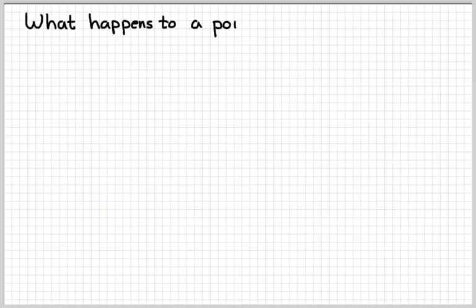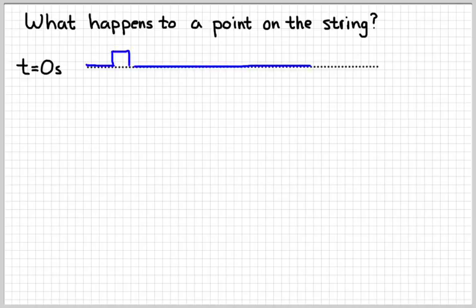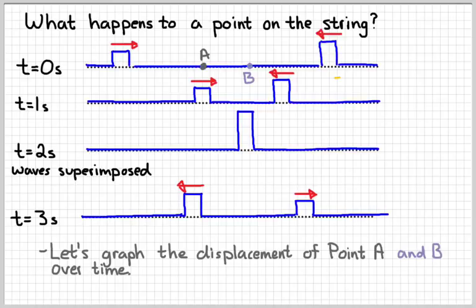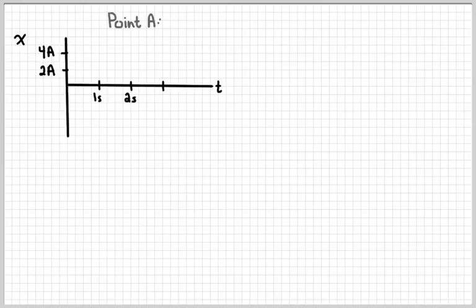The next thing we're interested in is what happens to a point on the string as these two waves go through it. I'm going to bring back the previous example and redraw it. What we want to do is graph the displacement of two points — point A and point B — over time. I put two points on the string: point A to the left of the center, and point B right at the center. I'm going to set up a position-versus-time graph for point A.